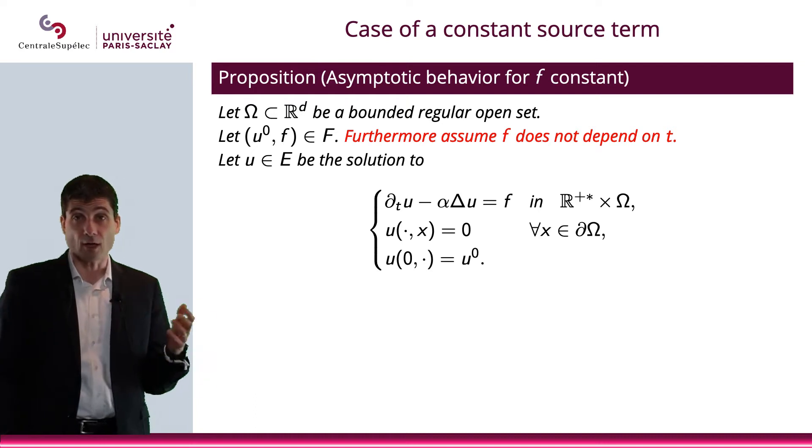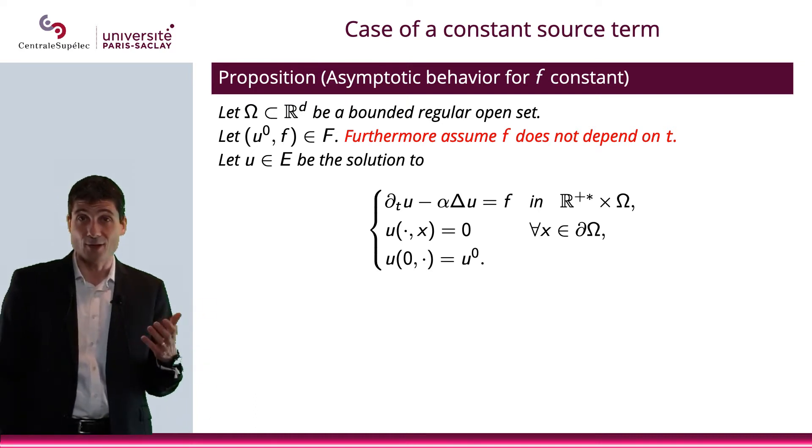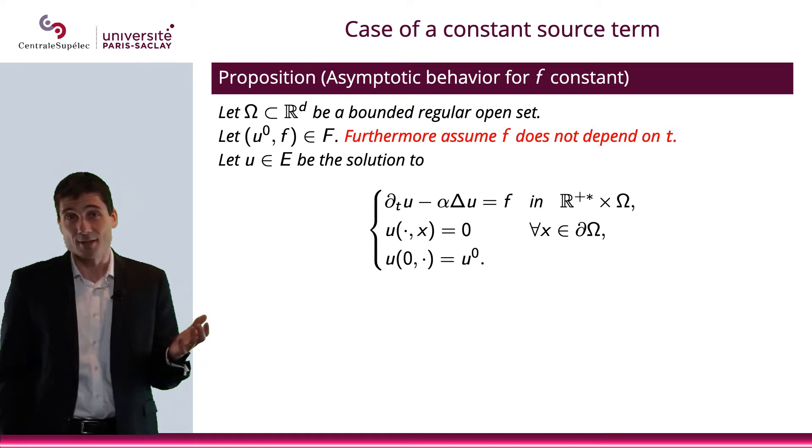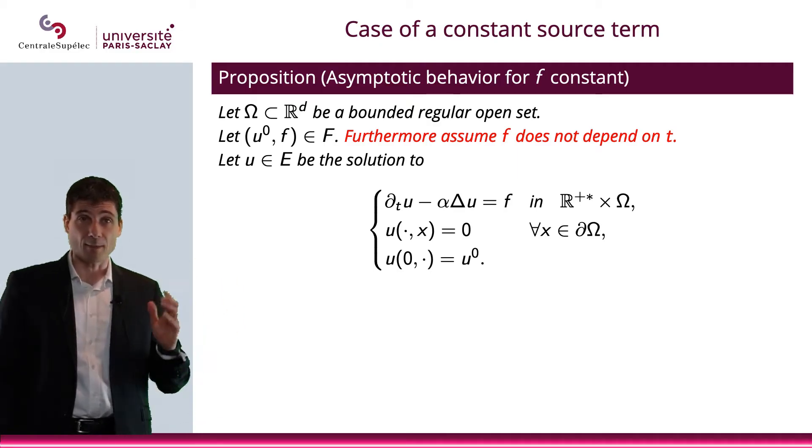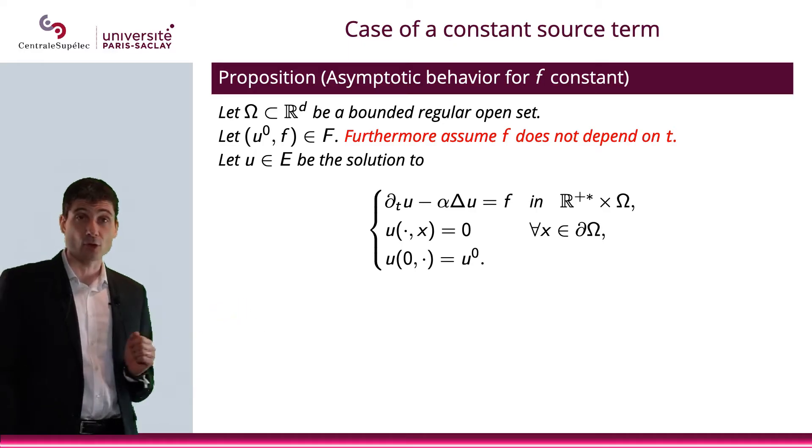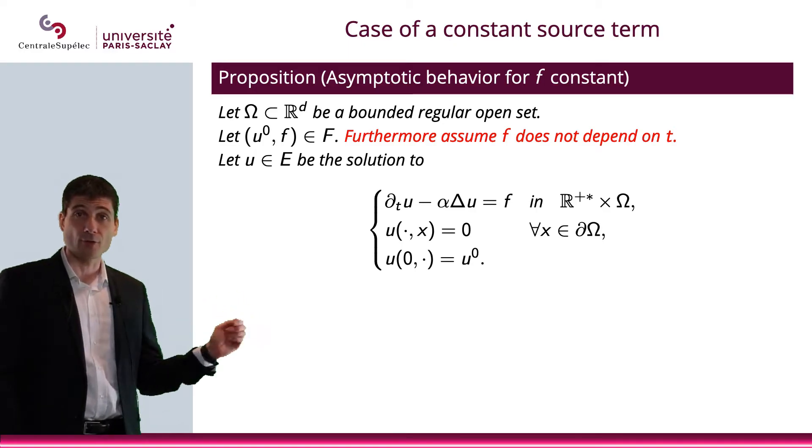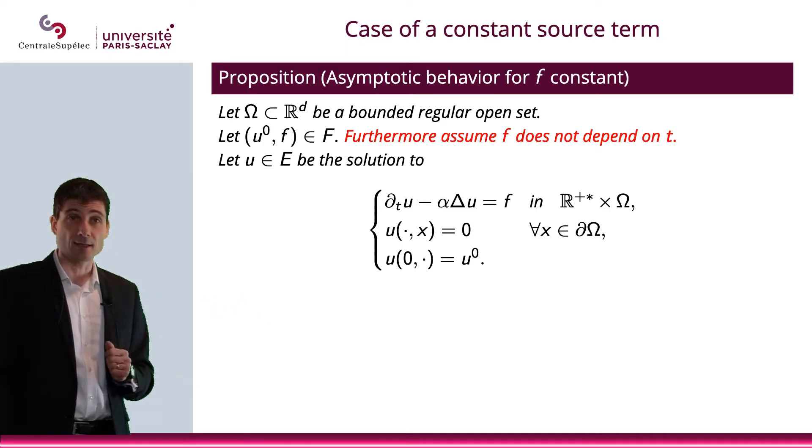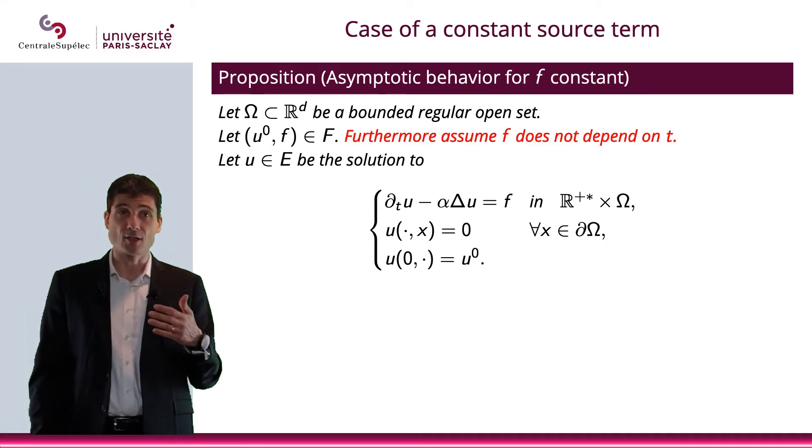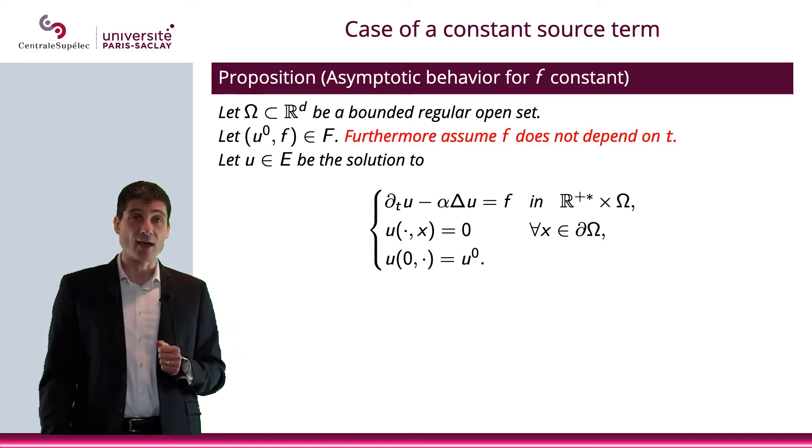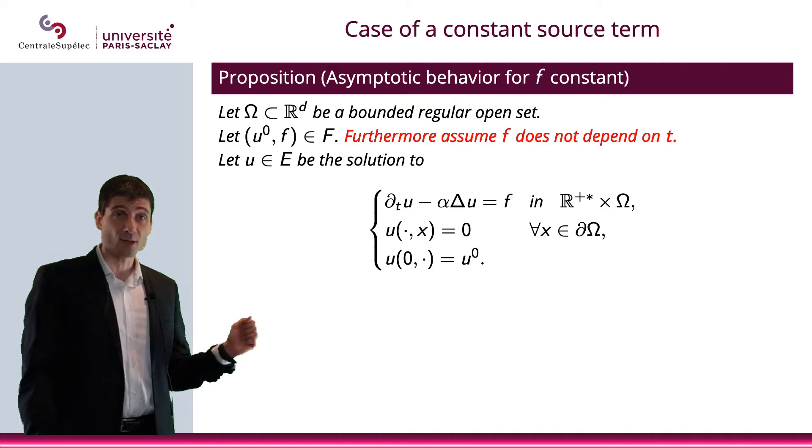Well, u0 obviously is dependent of t because it's the value of the temperature at t equals zero, but f here will also be independent of t. u will be the solution to the heat equation. We know the space it lives in, this space E that we have introduced before. So this is what we have.